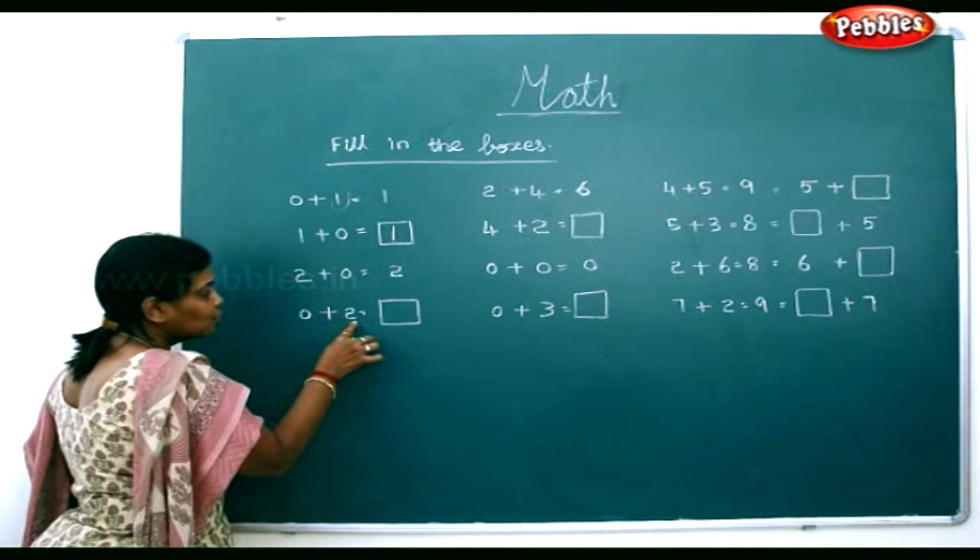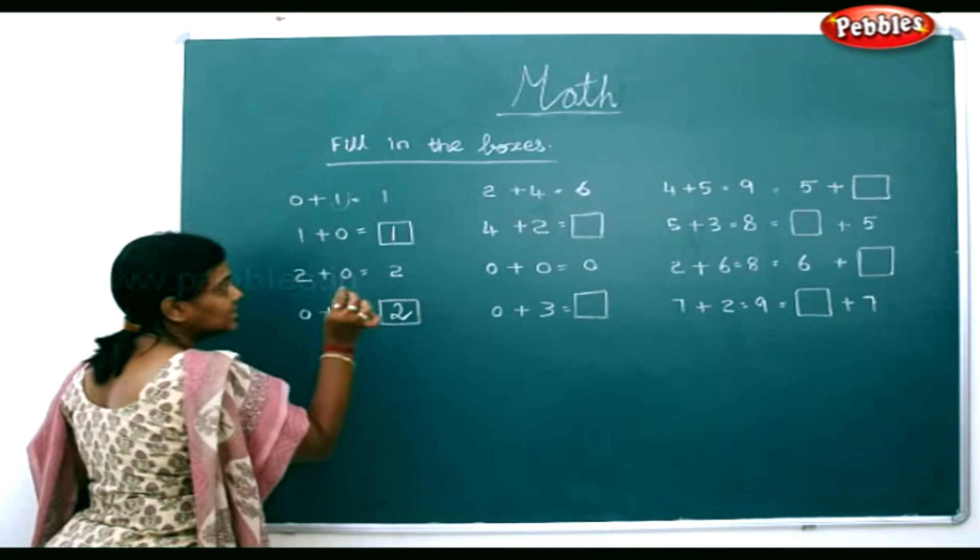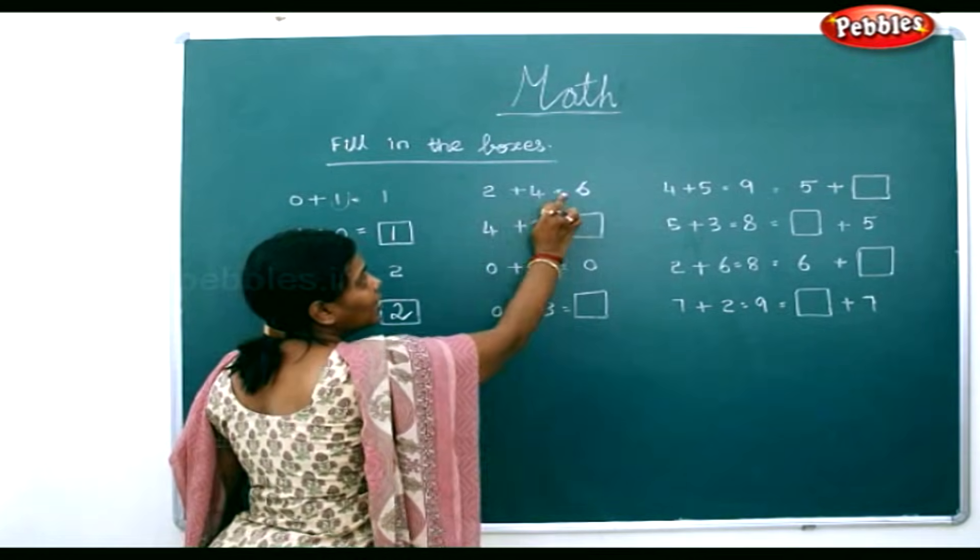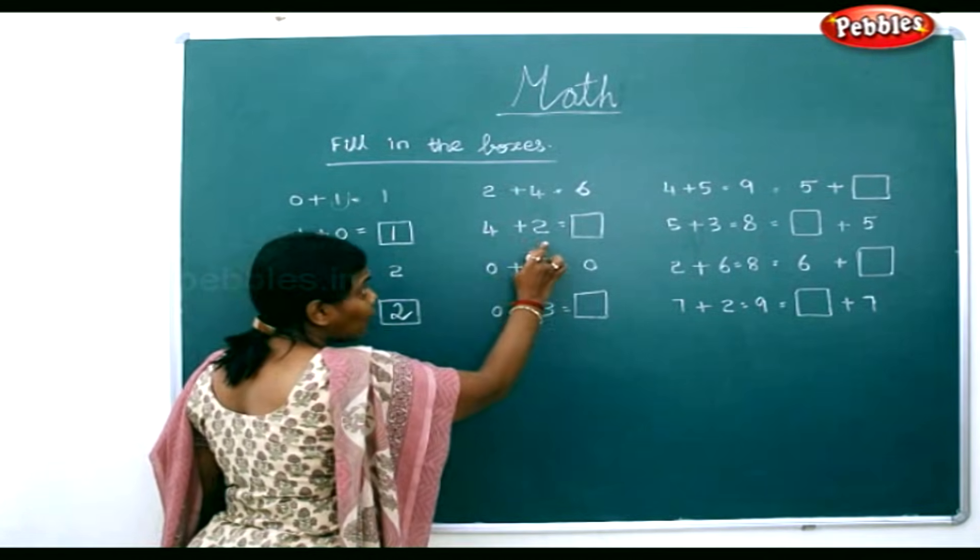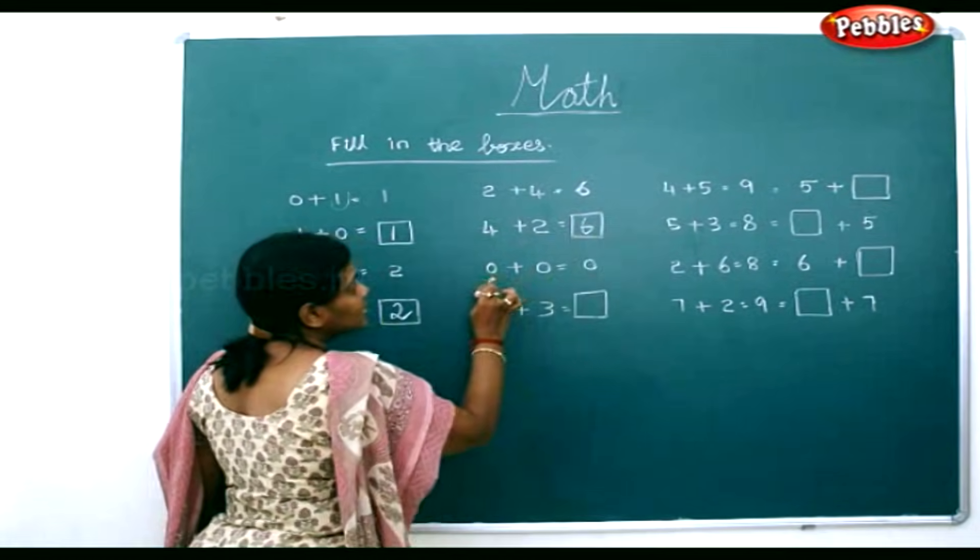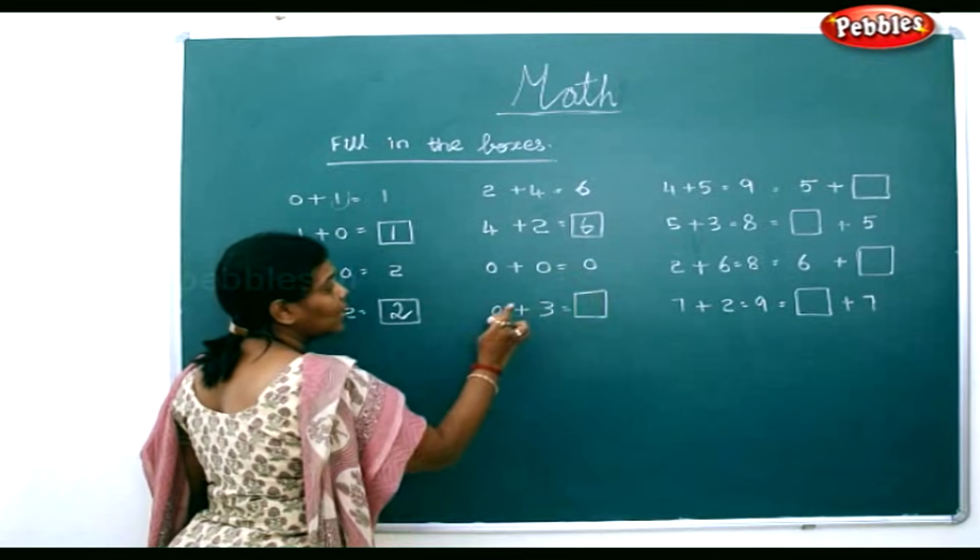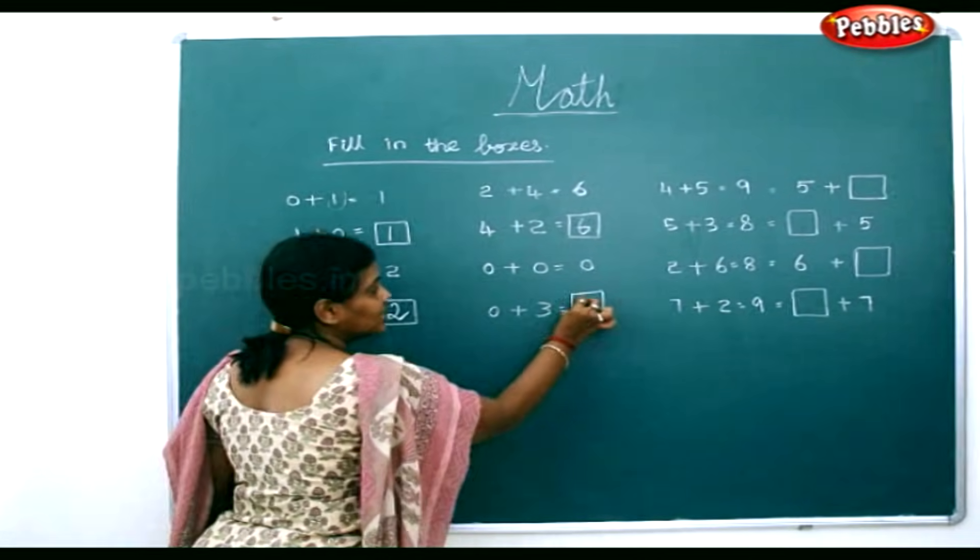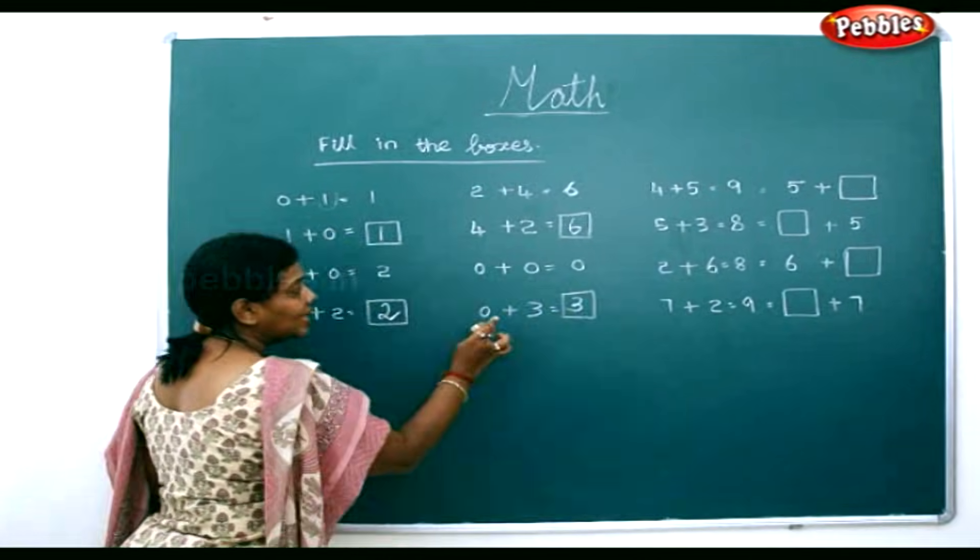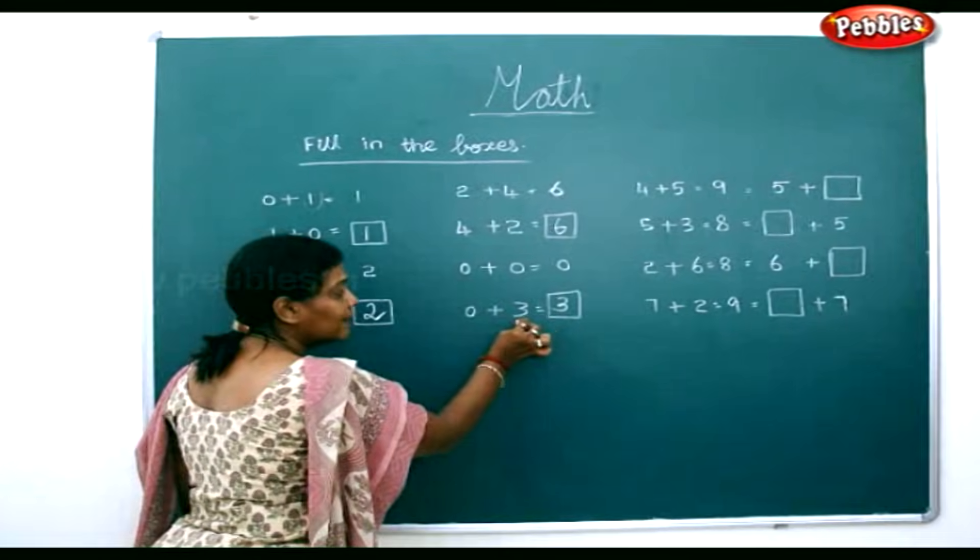0 added to 2 will be the number itself. 2 plus 4 is 6. 4 plus 2 also is 6. 0 plus 0 is 0. 0 plus 3 is 3. 0 added to any number will be the number itself.